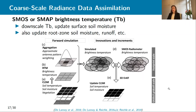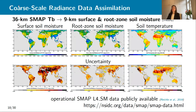The data assimilation results start from 36 kilometer data and we go to nine kilometer estimates — for example, surface and root zone soil moisture and soil temperature. You see it's complete maps with no gaps. It's not only the surface, it's also the root zone and other variables. On top of that, we have uncertainty estimates which fall out of the data assimilation system. We have this data every three hours, as opposed to the satellite data which are only recurring every few days. This is an actual operational product — the SMAP Level 4 product — which is publicly available.